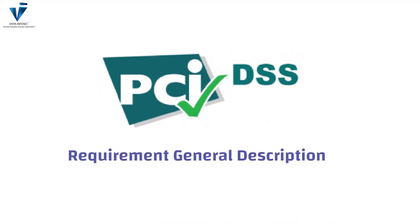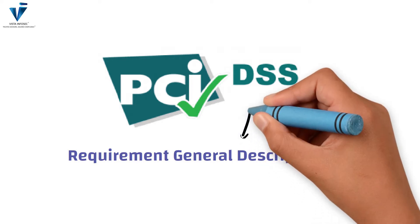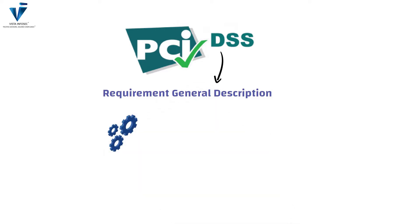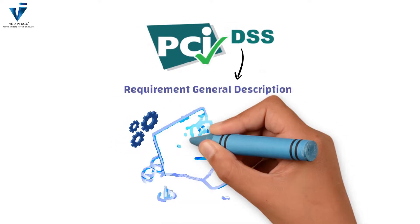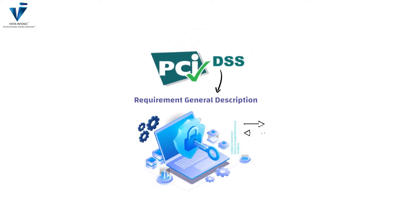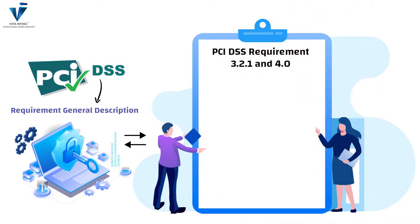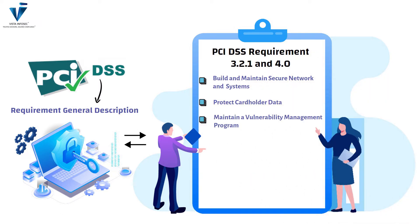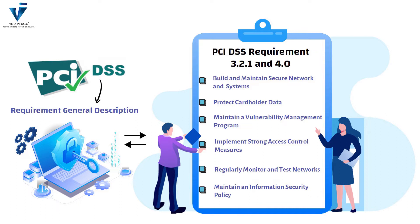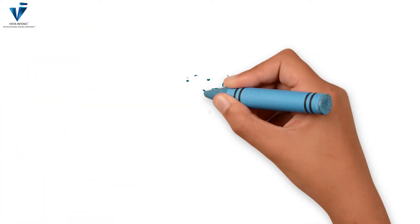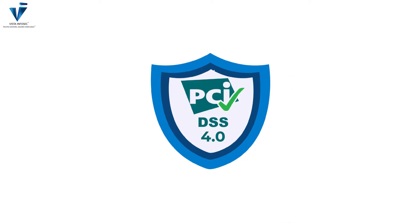Before heading straight to the differences, let us first understand that the primary objective of PCI DSS still remains the same. The security controls and processes for PCI DSS requirements — both 3.2.1 and 4.0 — are still the same: (1) building and maintaining secure network and systems, (2) protect cardholder data, (3) maintain a vulnerability management program, (4) implement strong access control measures, (5) regularly monitor and test networks, and (6) maintain an information security policy.